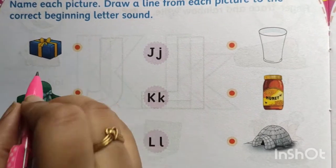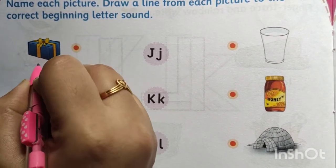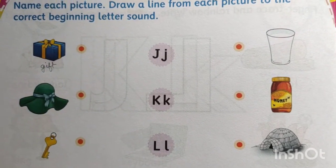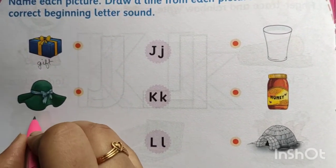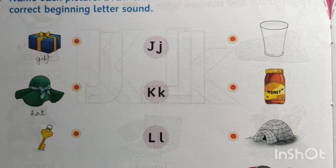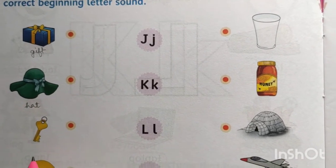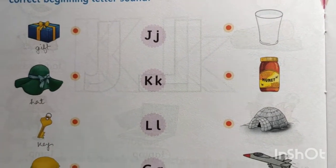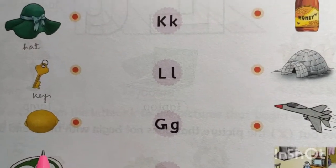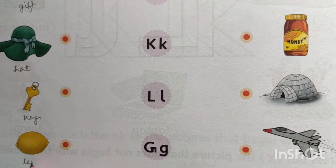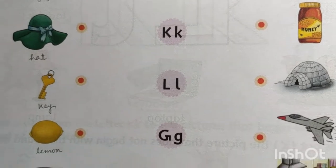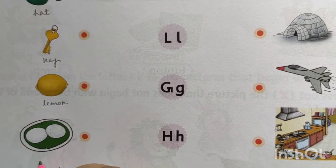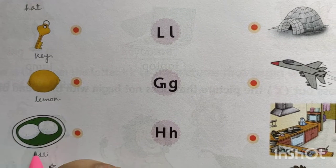First one: this is gift — G-I-F-T, gift. This is hat — H-A-T, hat. This is key — K-E-Y, key. This is lemon — L-E-M-O-N, lemon. This is idli — I-D-L-I, idli.